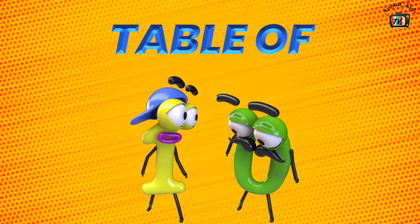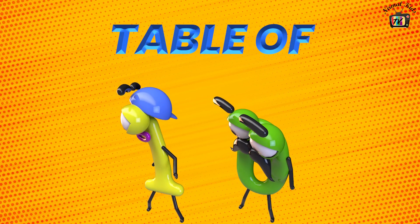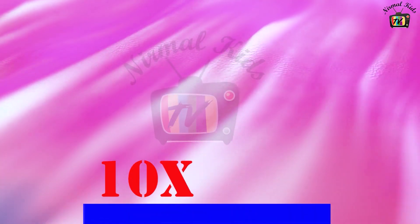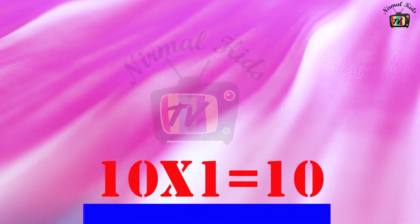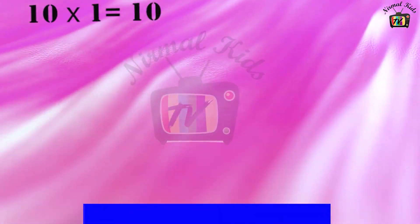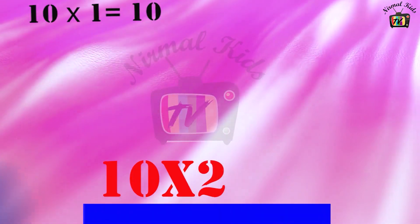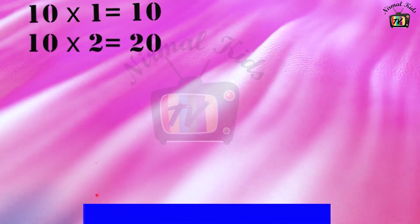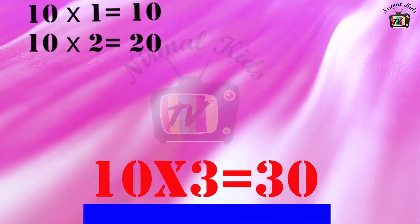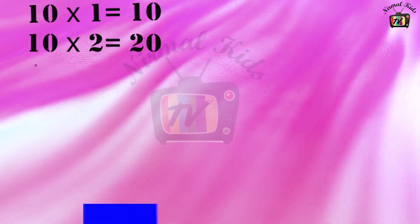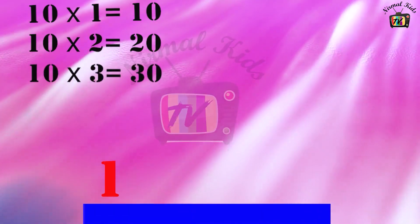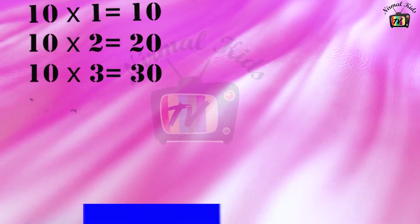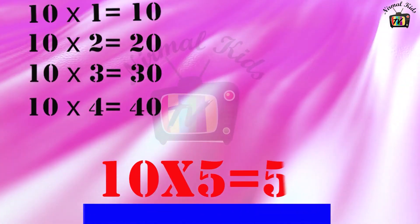Table of 10. 10 1's are 10. 10 2's are 20. 10 3's are 30. 10 4's are 40. 10 5's are 50.